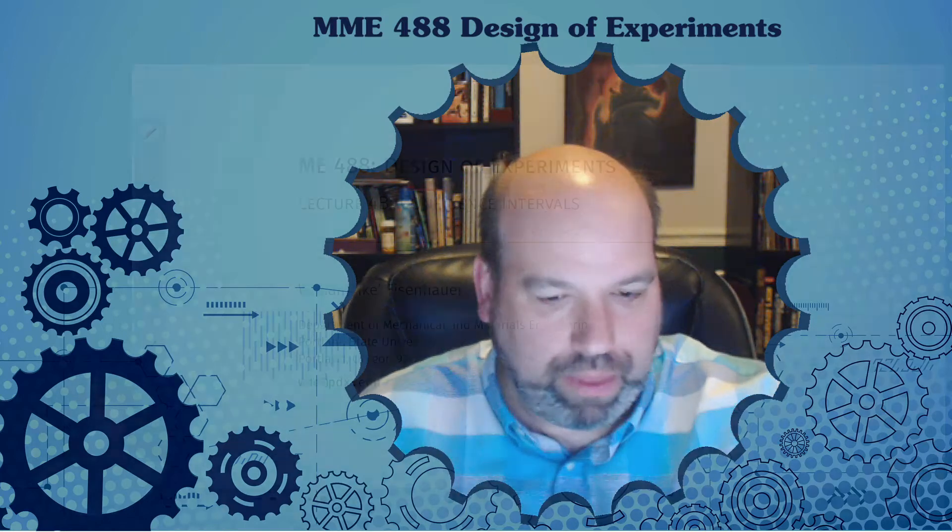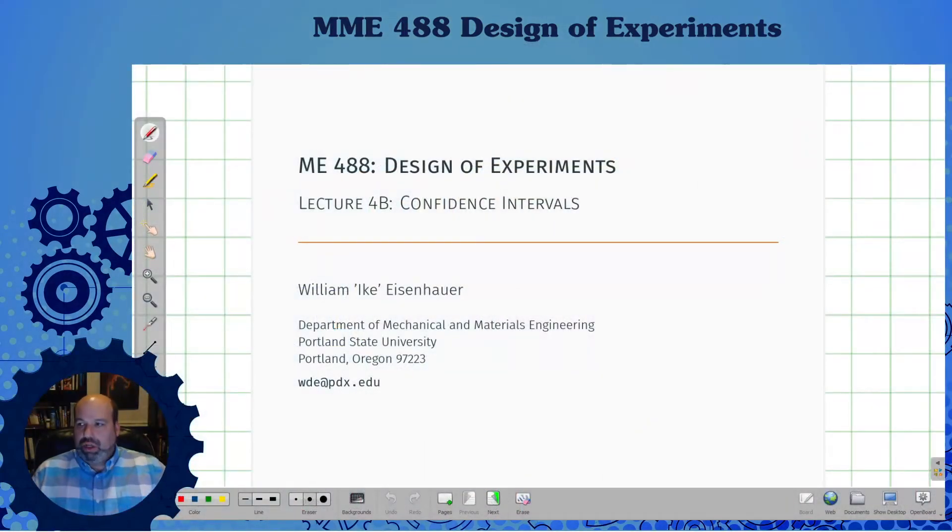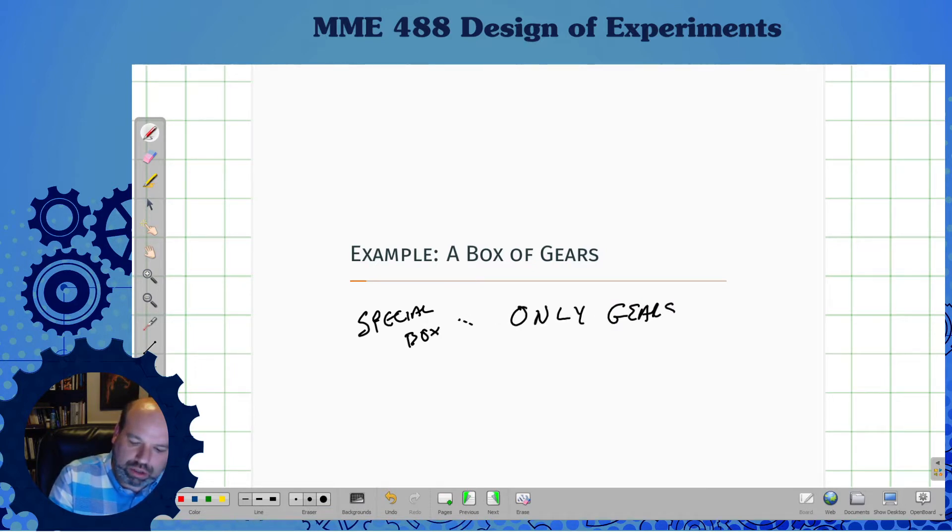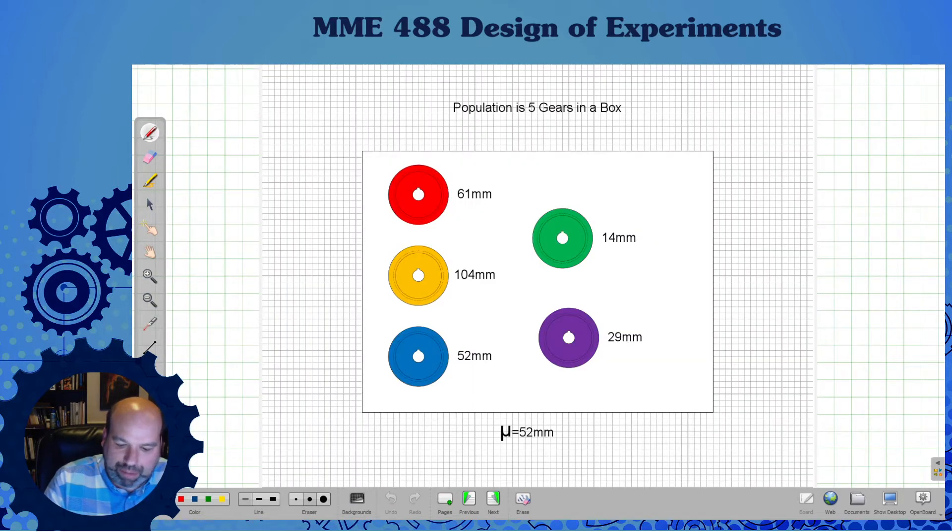So let's get started. This is lecture 4b, confidence intervals. I'm going to start with a demonstration about a box of gears. This special box of gears - these are the only gears that exist, meaning we are talking about the population, and it's going to be a small population. The population is only five, so big N equals five. There's only these five possible gears.